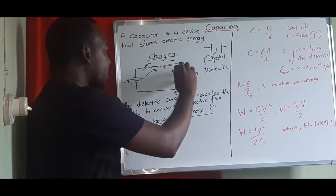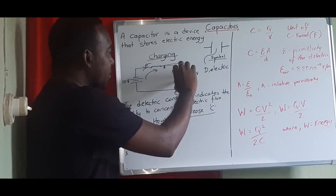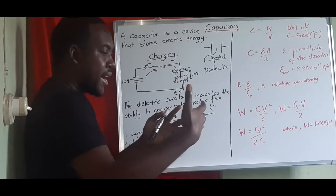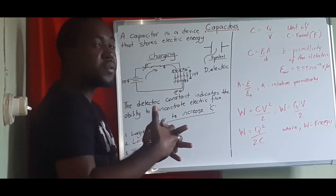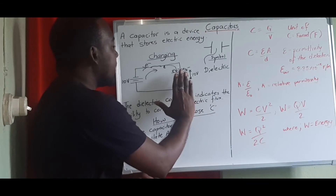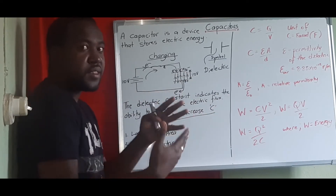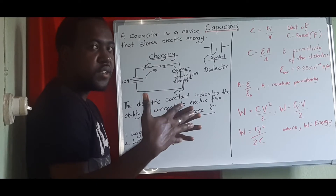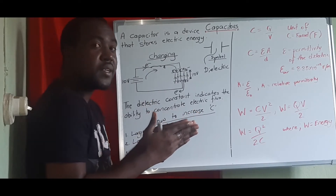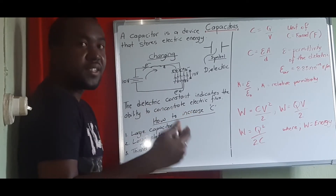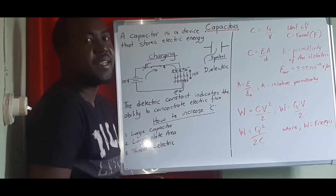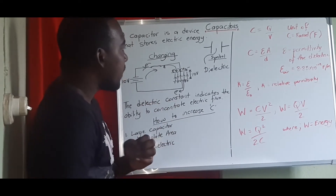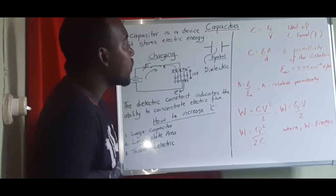Finally, we use a thinner dielectric. A thinner dielectric decreases the gap between the plates, which compacts your electric flux — the field lines come very close together — and that is perfect for storing energy.